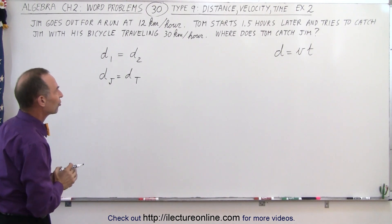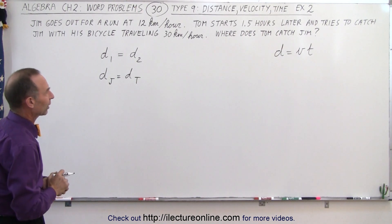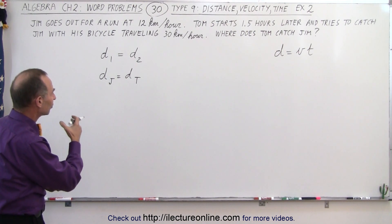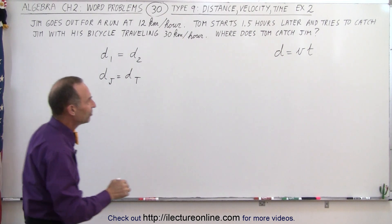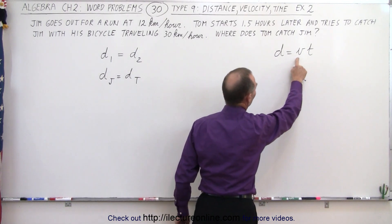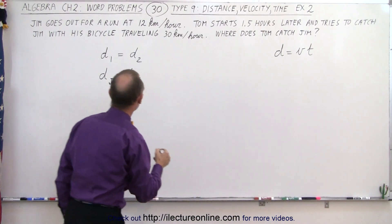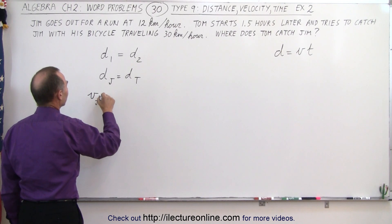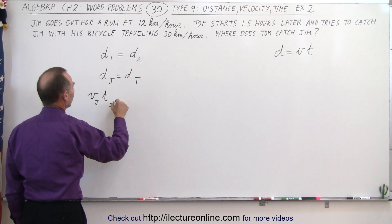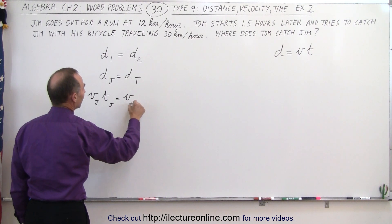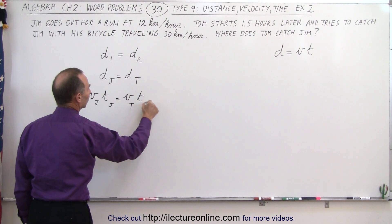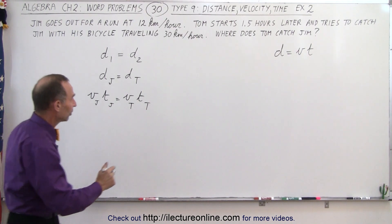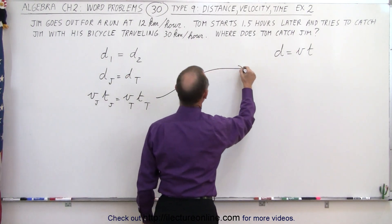So we're going to use that strategy and that equation. If distance traveled by Jim is equal to distance traveled by Tom and distance is defined as velocity times time, we can then say that the velocity traveled by Jim times the time traveled by Jim must equal the velocity traveled by Tom times the time traveled by Tom. And that is how we're going to solve the problem. So let's go over here and implement that.